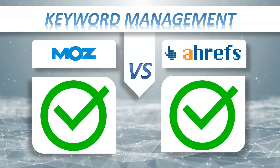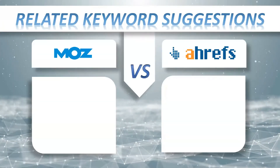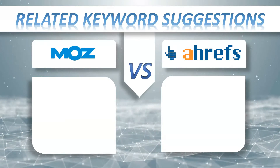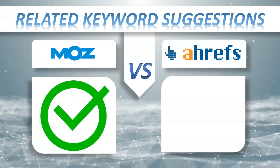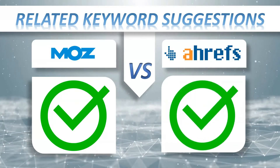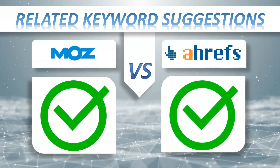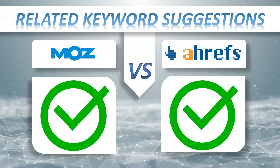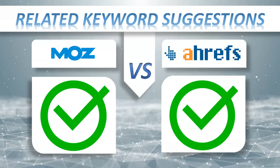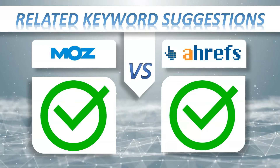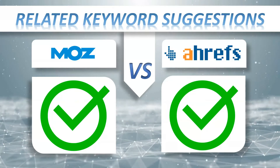Related Keyword Suggestions: Moz Pro — plus, Ahrefs — plus. The easiest way to attract clients is to find out what your potential customers or readers are searching for on Google and create content on your website around these topics.